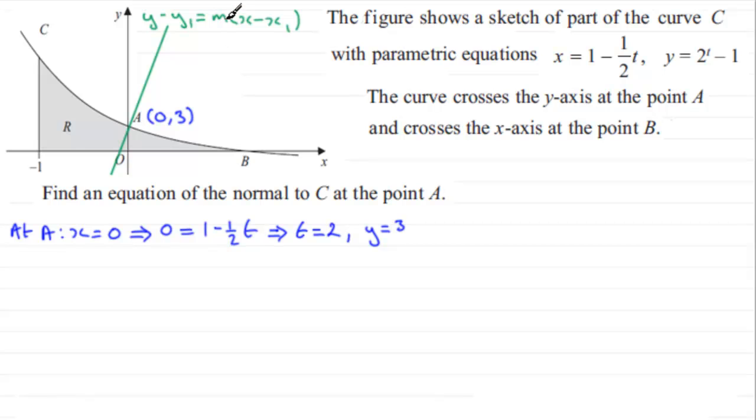Now we need to get the gradient of the normal, and we can use the perpendicular gradient rule that once we've got the gradient of the tangent here, we just do the negative reciprocal of it. But to get the gradient of the tangent, we need to find dy by dx. To get dy by dx, we're going to need to use the chain rule. Chain rule being that dy by dx is dy by dt times dt by dx. It's as if these two dt's cancel out, just leaving us with dy over dx.